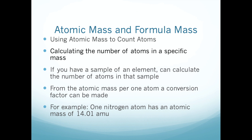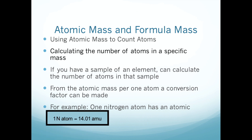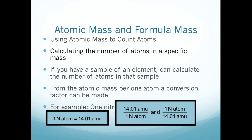If you have an individual element and want to figure out its average mass, you can take that average atomic mass from your periodic table and get a conversion factor from it — it tells you the mass of an individual atom. For example, if you look up nitrogen in your periodic table near the top right, you'll see that the average mass is about 14.01 atomic mass units. That means one nitrogen atom is equivalent to 14.01 AMUs, giving us two conversion factors: 14.01 AMUs per nitrogen atom, or one nitrogen atom per 14.01 AMUs.